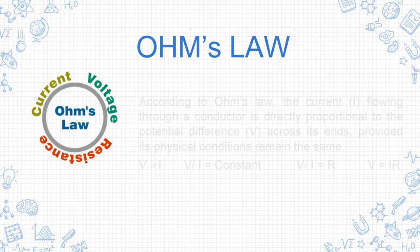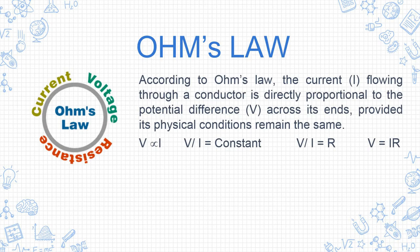According to Ohm's law, the current I flowing through a conductor is directly proportional to the potential difference V across its ends, provided its physical conditions remain the same. Directly proportional means that if the potential difference increases, the current increases; if the potential difference decreases, the current also decreases.